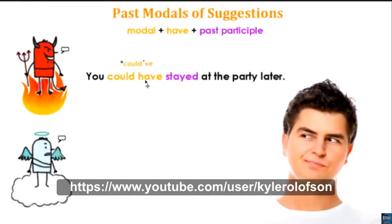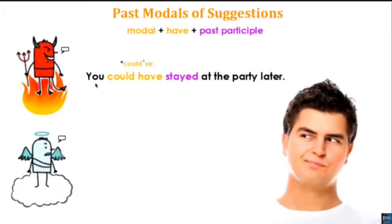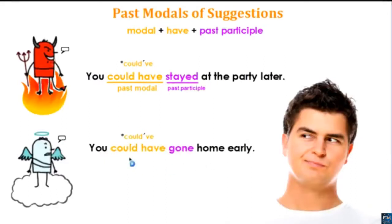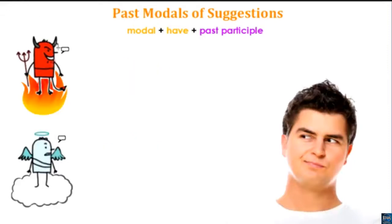We can also use 'could have' — the contraction is 'could've.' So: 'You could have stayed at the party later.' That's a type of suggestion. 'Could have' talks about certainty and speculation, but also in the context of giving a suggestion — this is a possible thing you could have done. His good side: 'You could have gone home early.' The past participle is 'gone.' The contraction is 'could've.'